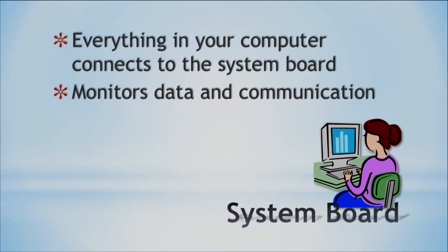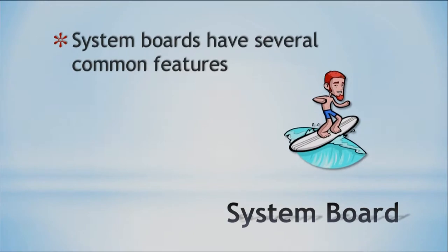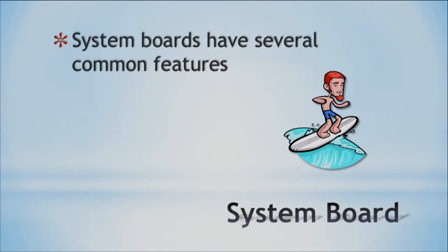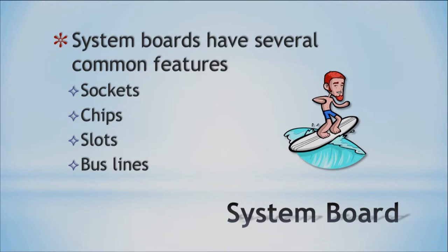Let's get into some more details about the system board. There are some common features, and it depends on whether it's a desktop, laptop, or cell phone, but common things include sockets, chips, slots, and bus lines. We'll talk more about each of these in the next few slides, and we'll even cover buses more in the next lecture.